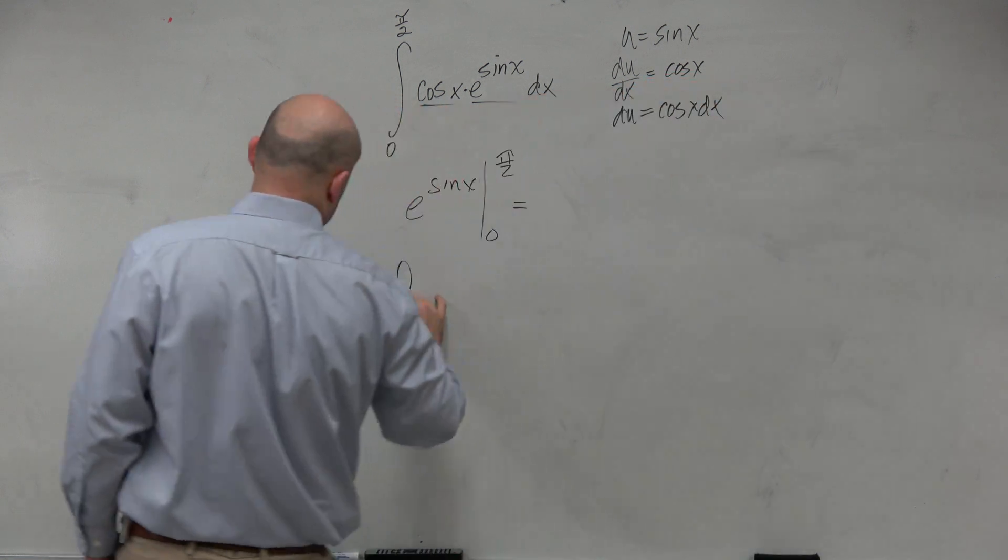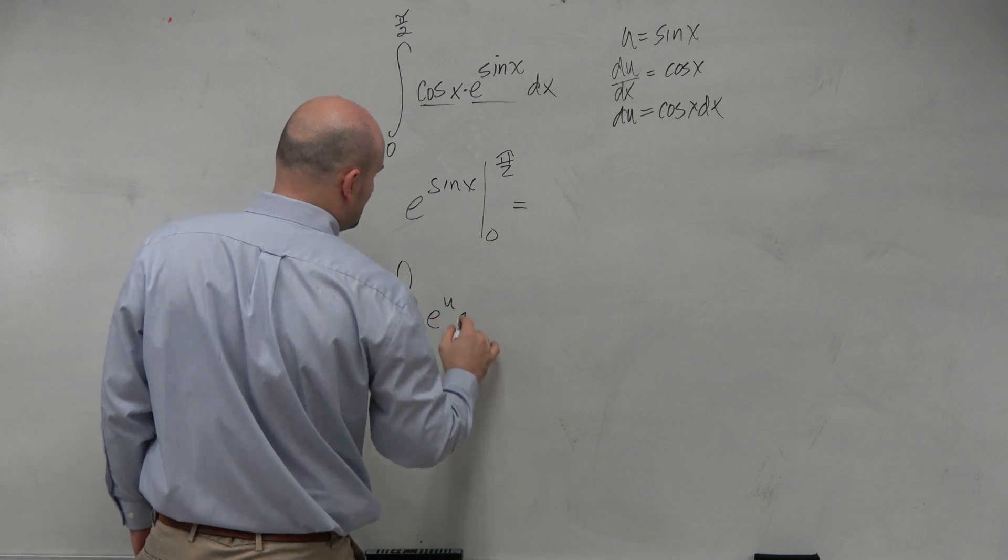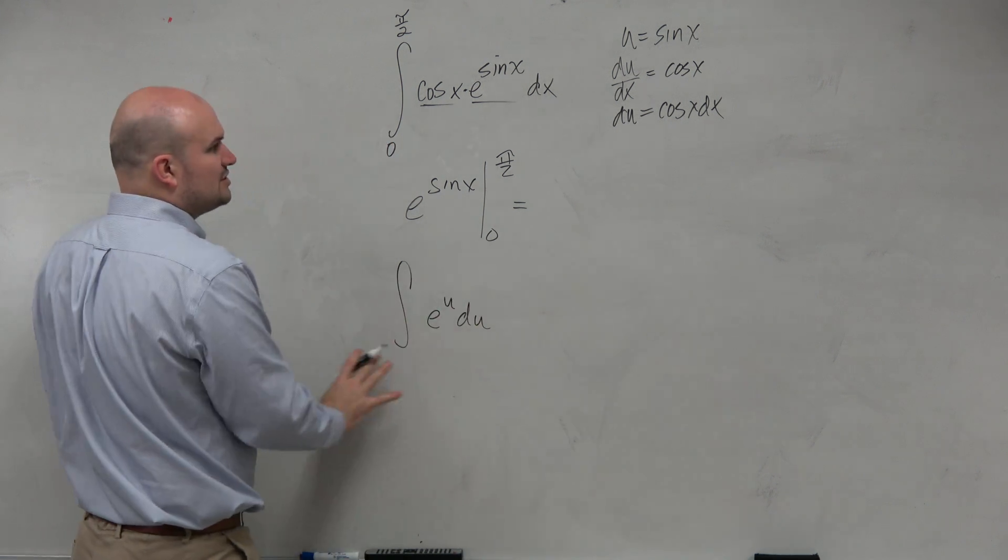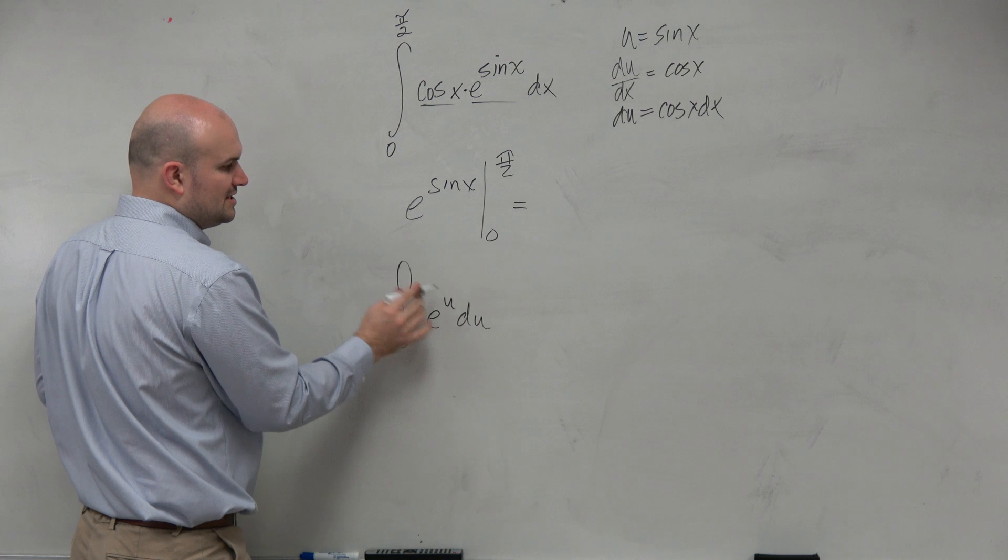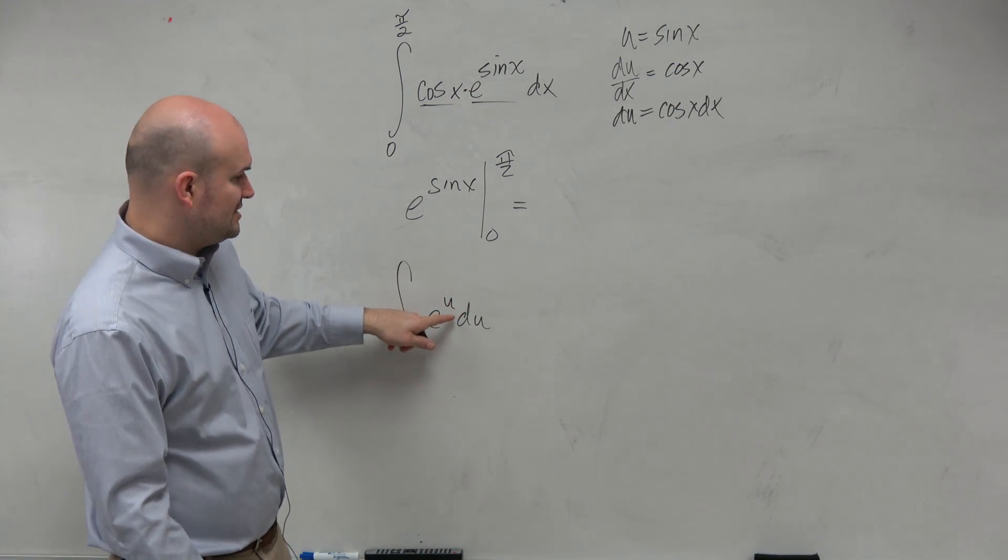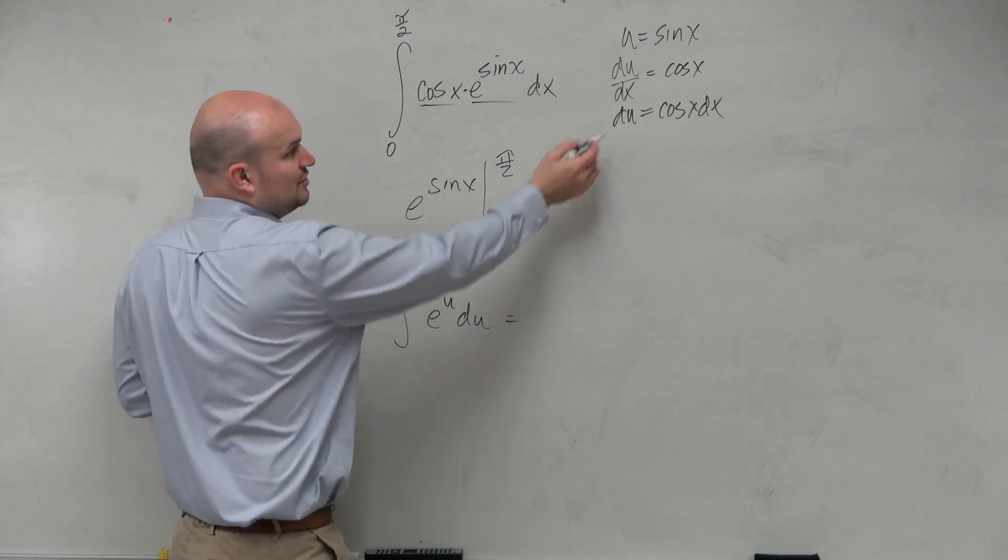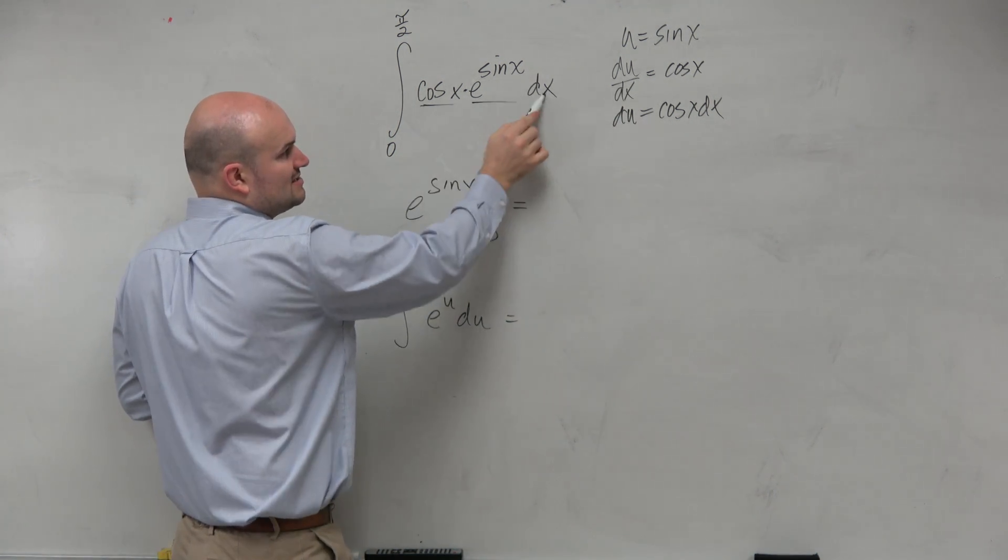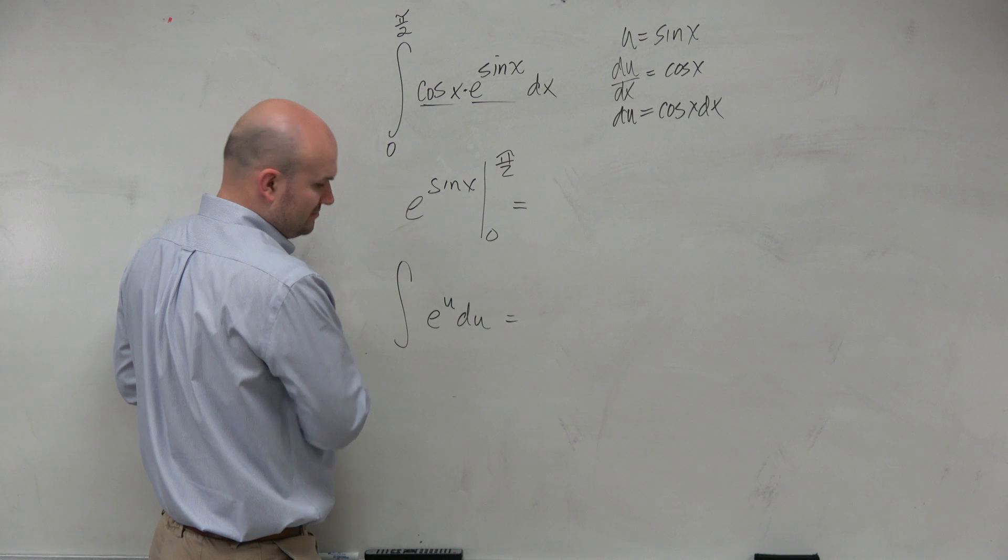So therefore, if you've integrated e to the u du, just think about that in terms of e. Forget about these symbols here. You would see that e to the u you could integrate to just it's equal to e to the u. And then du covers cosine of x dx. So everything is there, all right?